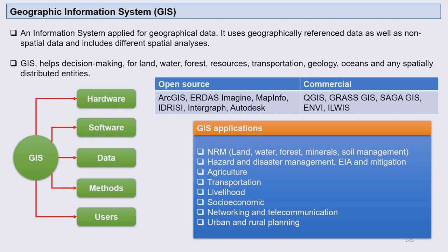GIS — Geographic Information System — is a tool or information system applied for representing various data analyses in a very user-friendly manner. This tool uses geographically referenced data as well as non-spatial data and includes different spatial analyses. GIS also helps in decision-making for land, water, and all natural resources — transportation, geology, oceans — and can display anything in a pictorial form. To work with GIS, you need good quality hardware, software, data, various methodologies, and skilled manpower.